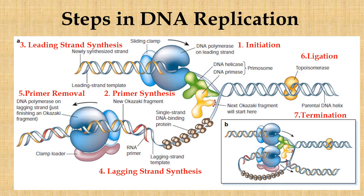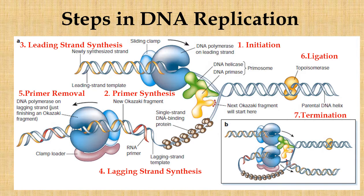The second step is primer synthesis. An enzyme called DNA primase — a type of DNA-dependent RNA polymerase — lays down small structures of RNA called primers. Topoisomerases, shown in the figure, separate each side of the double helix to relieve stress ahead of the replication fork. The third step is leading strand synthesis: an enzyme complex called DNA polymerase walks down the DNA strands and adds new nucleotides to each strand. Nucleotides pair up — adenine with thymine and guanine with cytosine.